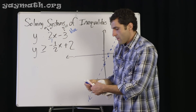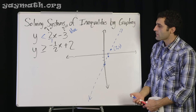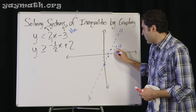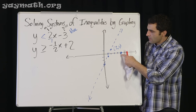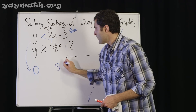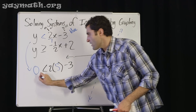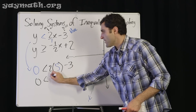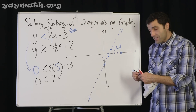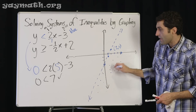Not only do we use a dotted line, but there are other points that make this inequality work. For example, let's try the point (5, 0): plug in y = 0 and x = 5, and we get 0 less than 2 times 5 minus 3, which is 0 less than 7. Yes, that's true — so (5, 0) is a solution, and similarly all those other points are solutions too.